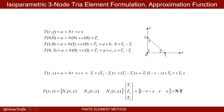T(r,s) = A + Br + Cs. At node 1 at (0,0), T equals T1, so A = T1. At node 2 at (1,0), A + B = T2, so B = T2 − T1. At node 3 at (0,1), A + C = T3, so C = T3 − T1.